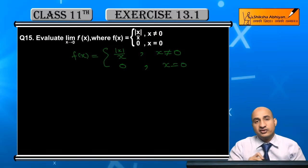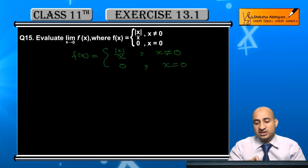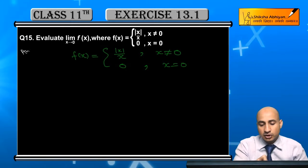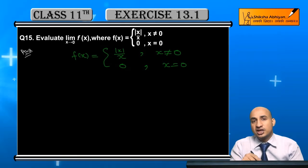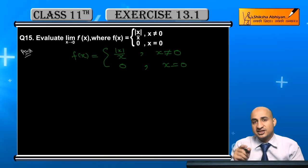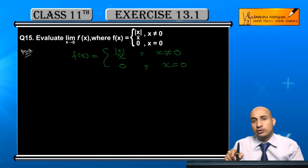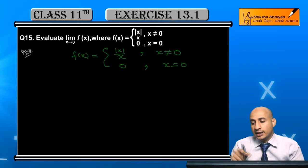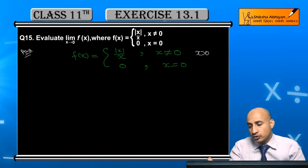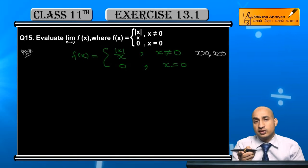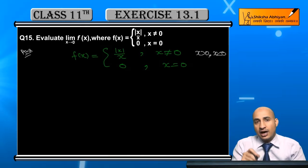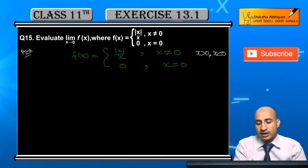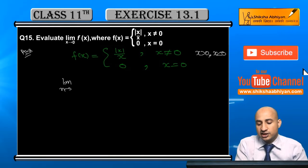Here is the defined function. Now, x is not equal to 0. If x is greater than 0 or x is less than 0, in both cases the value of modulus of x upon x differs. Since we are extending to 0, we have to evaluate limit x tends to 0 of f(x). In this case, we will not write directly — we will write the left-hand limit and the right-hand limit.